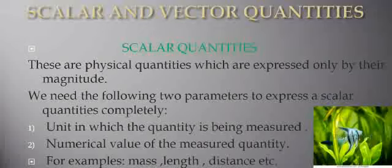For example, if you have to cover 4 kilometers and then 6 kilometers, you can simply add them to get 10 kilometers. Or if you have 2 kg sugar and 4 kg sugar, you can add, subtract, multiply, or divide them. A scalar quantity is symbolically written by its English letter — for example, mass is represented by m, time by t, and speed by v.